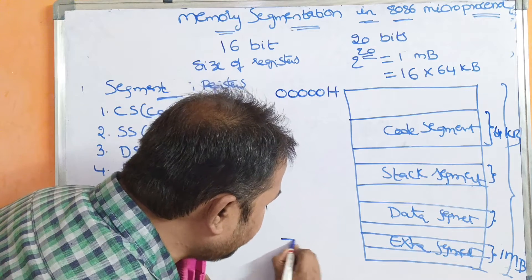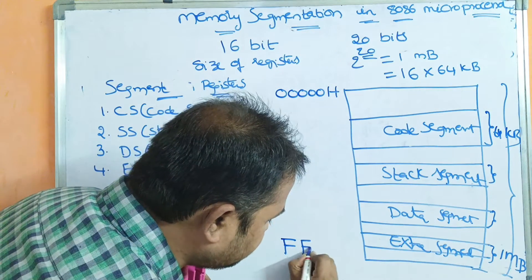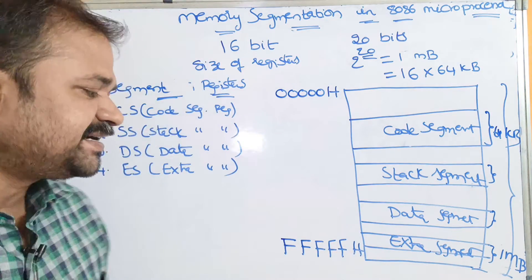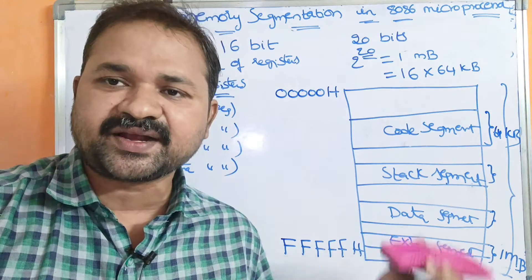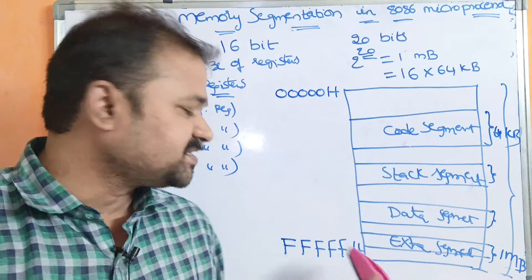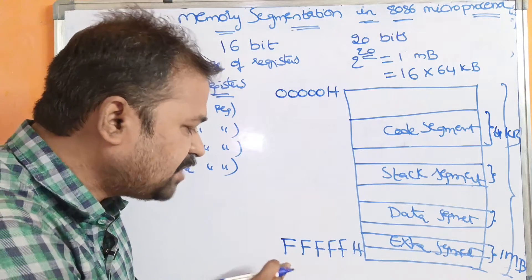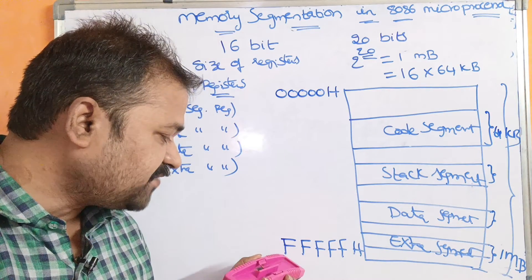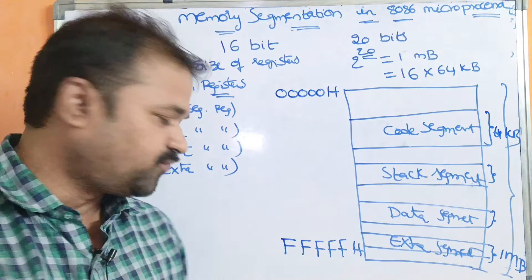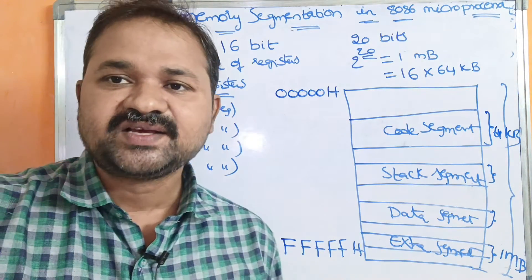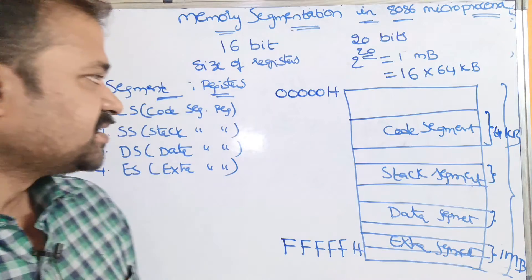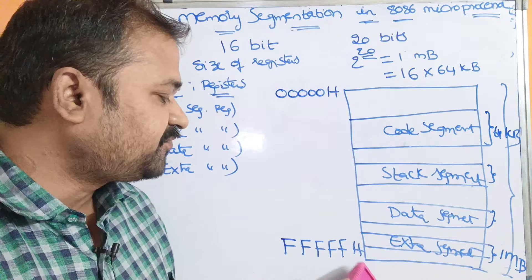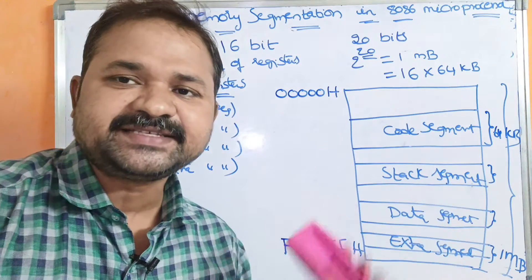The last location of the main memory is FFFFFH — five Fs — where H specifies that it is hexadecimal notation, or that it is an address. F is the maximum hexadecimal digit, so each F represents 4 bits, and five Fs means 4 into 5 equals 20 bits. So the range of the main memory is 00000H to FFFFFH.